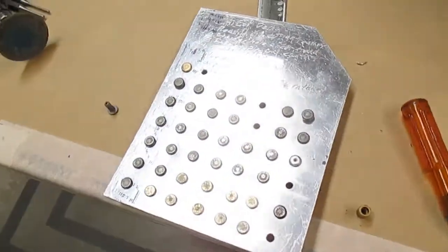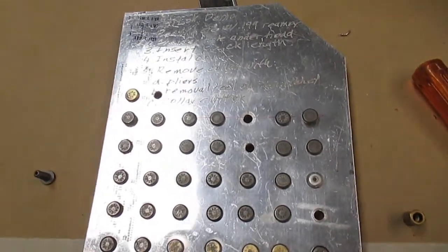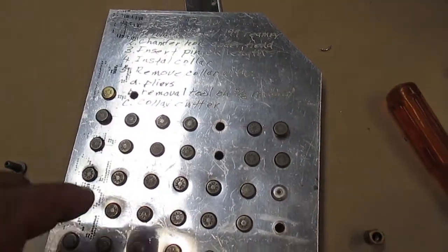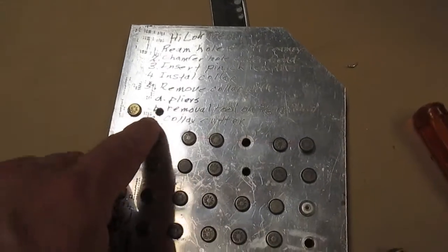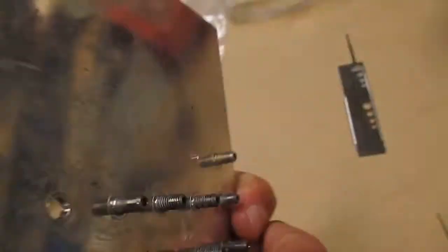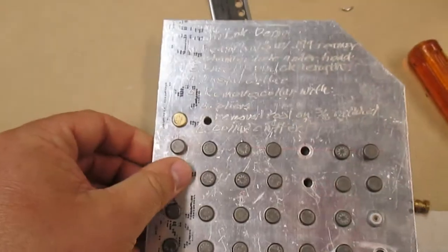Once we've got our hole, it says chamfer the edge of the hole. We're actually going to really deburr it, more than just a standard, almost kind of a little bit of a countersink. You can see that on both sides. We've really chamfered the edge.